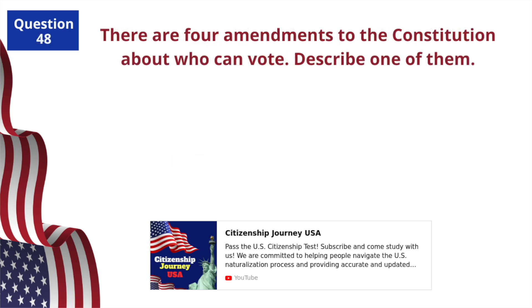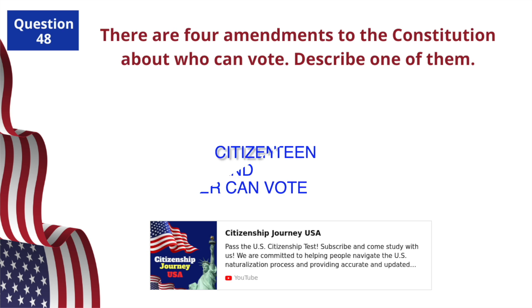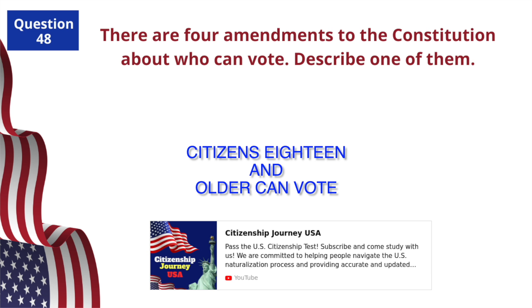There are four amendments to the Constitution about who can vote. Describe one of them. Citizens 18 and older can vote.